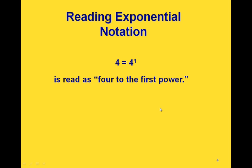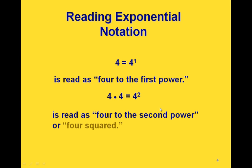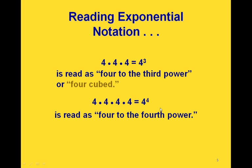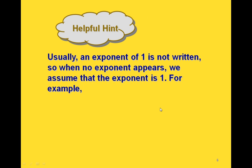To read exponential notation: four alone can be read as just 'four' or 'four to the first power.' We usually don't write the exponent when it's one. Four times four can be written as four with an exponent of two — called 'four squared' or 'four to the second power.' Three factors of four is 'four to the third power' or 'four cubed,' and four as a factor four times is 'four to the fourth power.' If there's no exponent written, we assume the exponent is one, so two equals two to the first, and seven equals seven to the first.